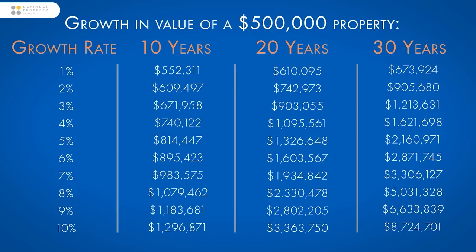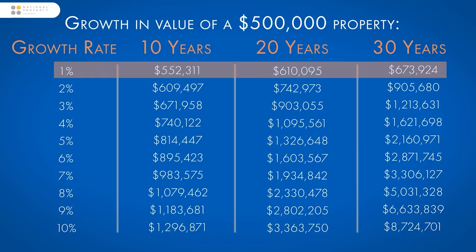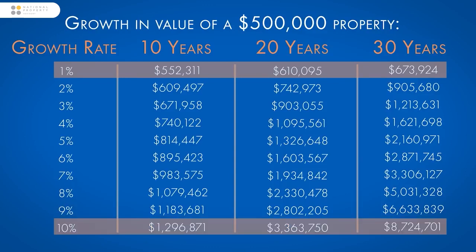If over the next 20 years your investment achieved only 1% growth, then ignoring the buy and sell costs and the net yield, you'd make a net profit of $110,000. If you're lucky enough to achieve 10% growth, then you'd make a net profit of well over $2.8 million.